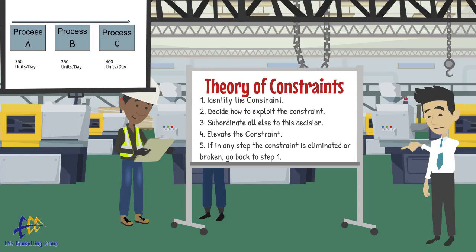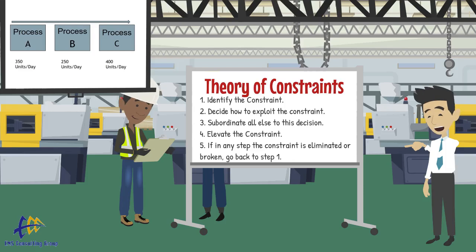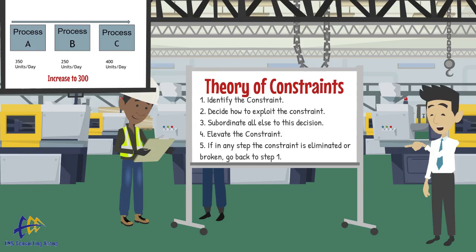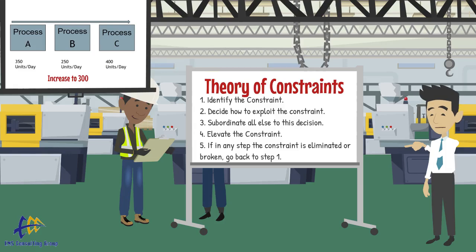Based on this, process B is the constraint. Our approach would be to increase the capacity of process B to match customer demand. If we could get B to handle 300 or more units per day, it would no longer be our constraint, since this would equal or best demand. We would then find the next constraint, which might even be the market.